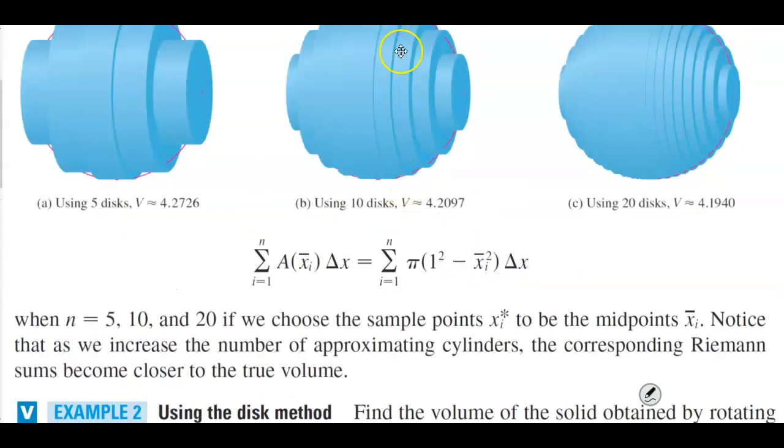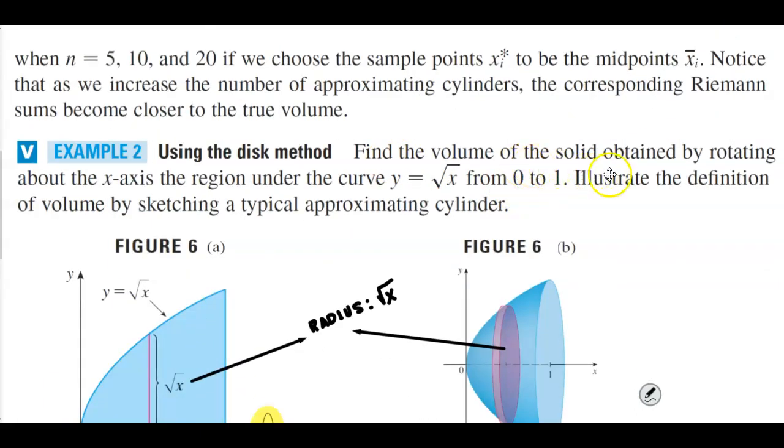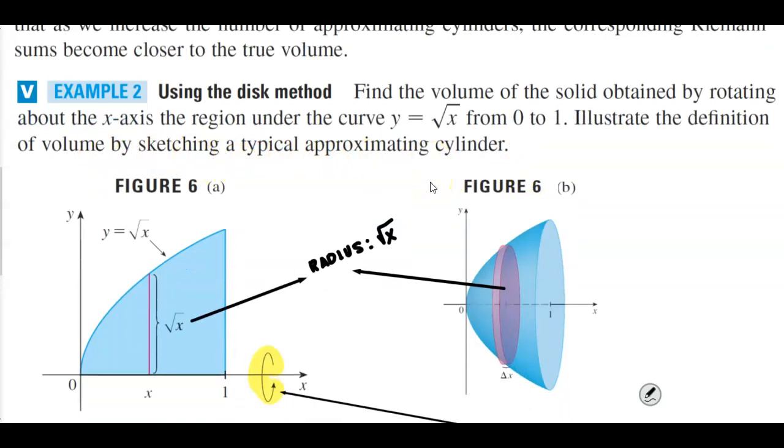Now this gives us the idea of how to use the disk method. We want to find the volume of the solid obtained by rotating about the x-axis the region under the curve y equals √x from 0 to 1. We're going to illustrate the definition of volume by sketching a typical approximating cylinder.